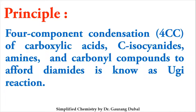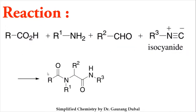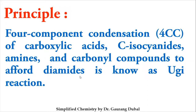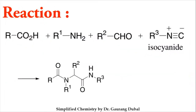In the reaction, one carboxylic acid is taken. For identification of the different substituents: R is used for the carboxylic acid, R1 for the amine, R2 for the aldehyde, and R3 for the isocyanide. This labeling helps identify where each component ends up in the product. When these four components undergo the Ugi reaction, we get a diamide — a compound possessing two amide groups.